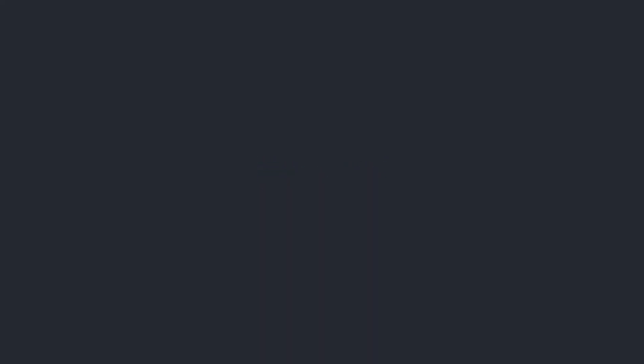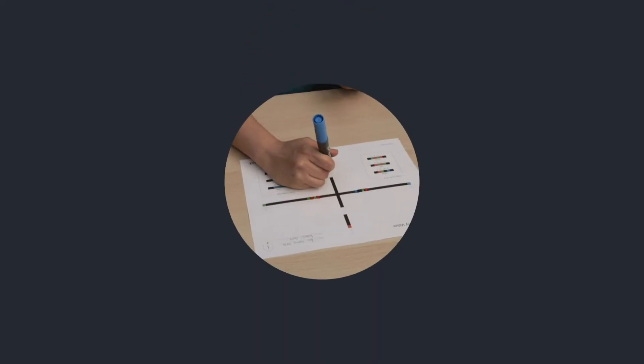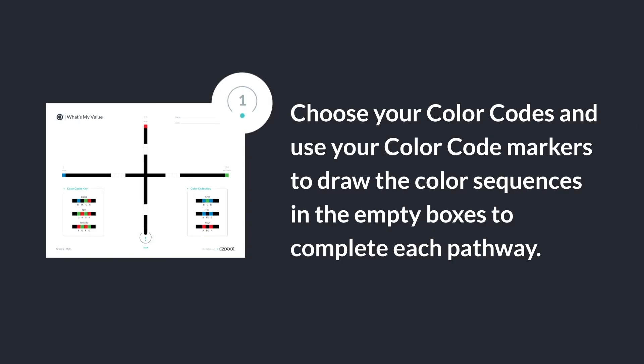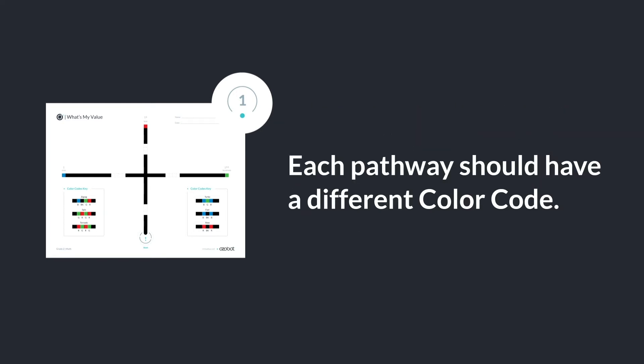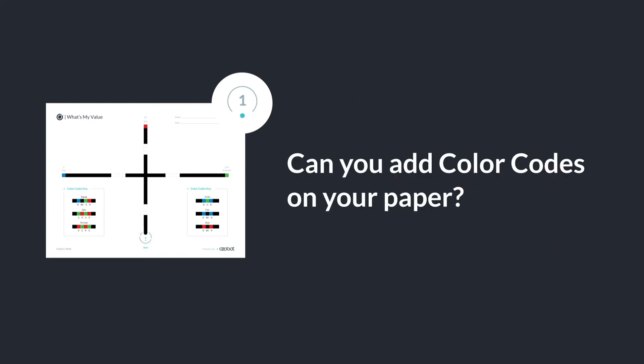It's your turn to code. Choose your color codes and use your color code markers to draw the color sequences in the empty boxes to complete each pathway. Each pathway should have a different color code.